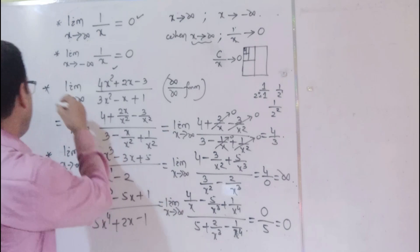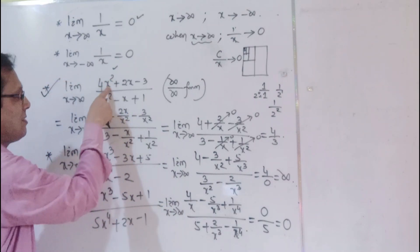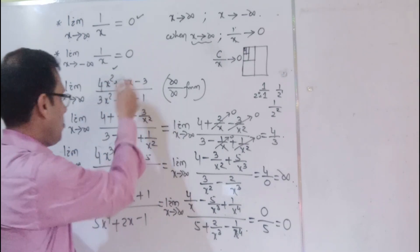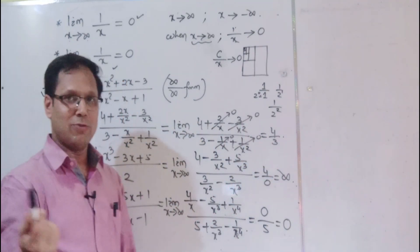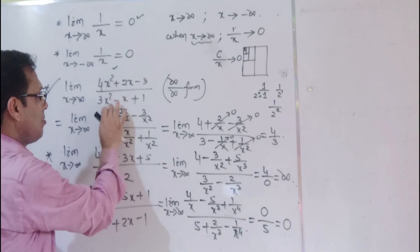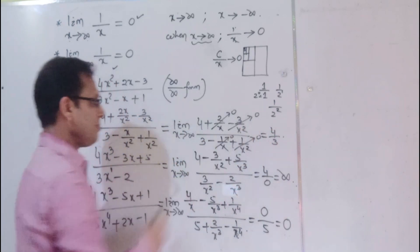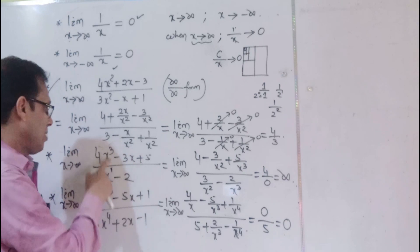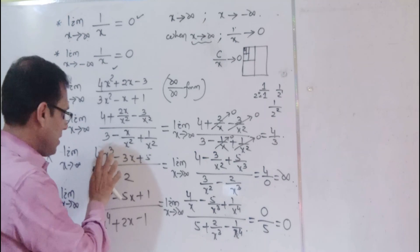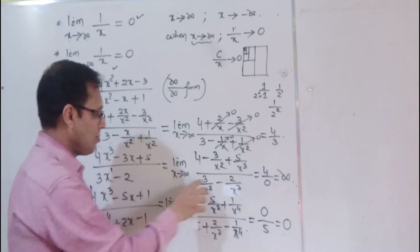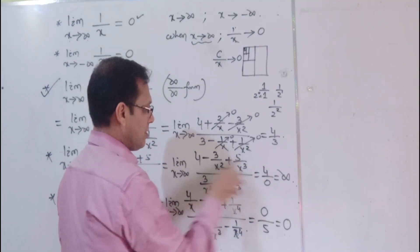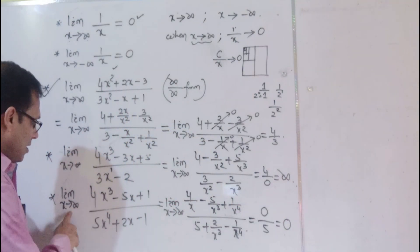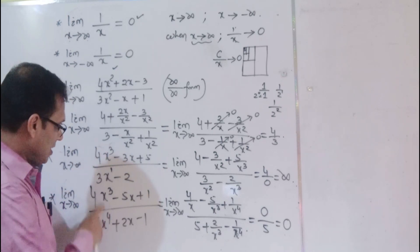So we have three types of results for infinity by infinity form: when degrees are equal the answer is a constant ratio, when numerator degree is higher the answer is infinity, and when numerator degree is lower the answer is 0. If the numerator is one degree less, dividing gives 0 in the numerator, so the limit is 0.